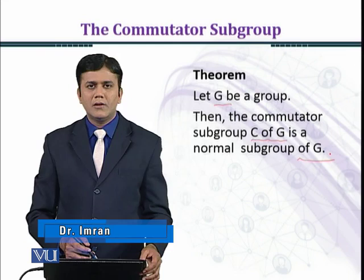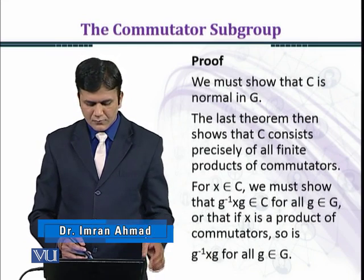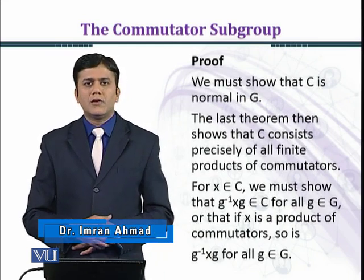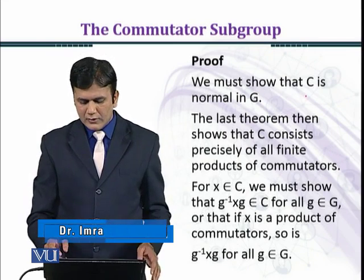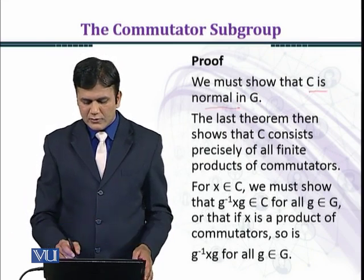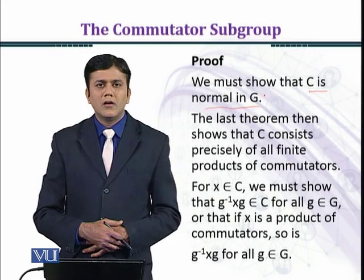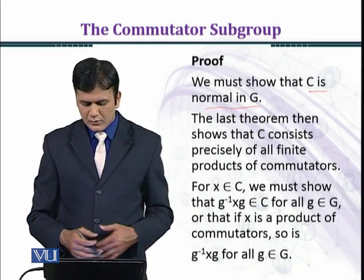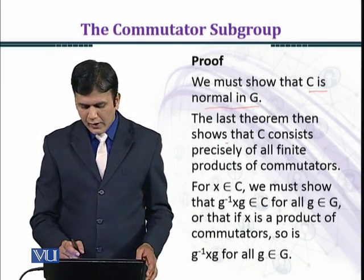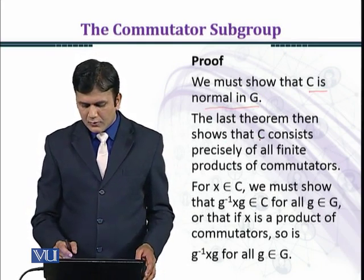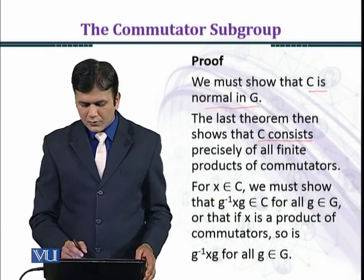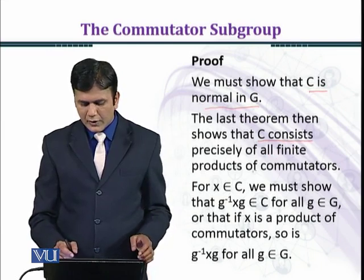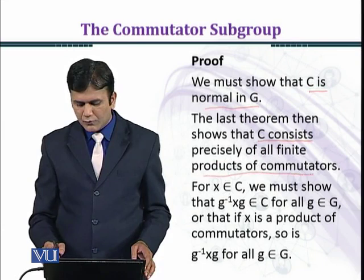Now we establish the theorem. We must show that C is normal in G. The theorem on the previous module showed that C consists precisely of all finite products of commutators.